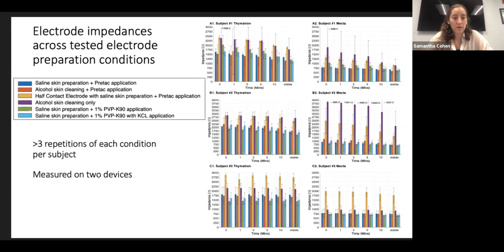Then we had alcohol skin cleaning only with no conductive gel. And then we prepared our own solution to mimic the role of Pre-Tac, which was used with a polymer PVPK90, and we had two conditions, one with just PVPK90 and one with KCL, which is just a salt. And those were both prepared with saline skin preparation. So for each subject, there were at least three trials for each condition, and this is accounted for in the error bar seen on the graph. Two commercial ECT machines were used to measure static impedance, the Thymatron and the MECTA.